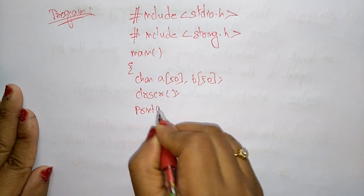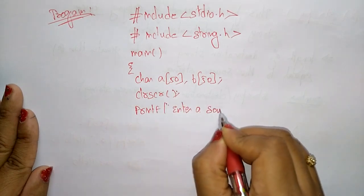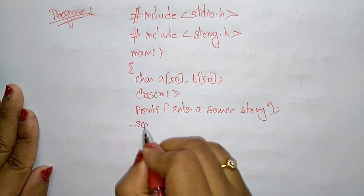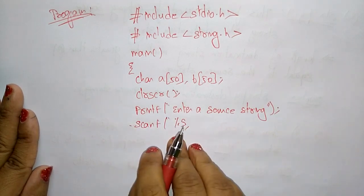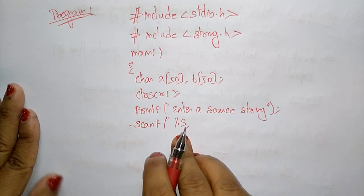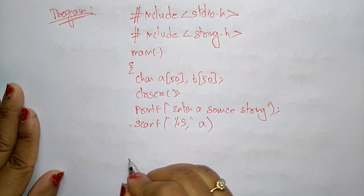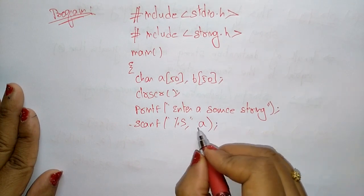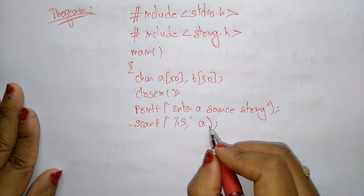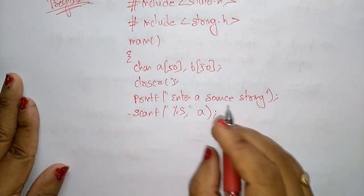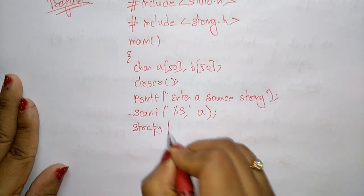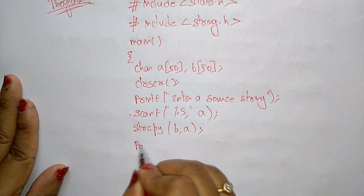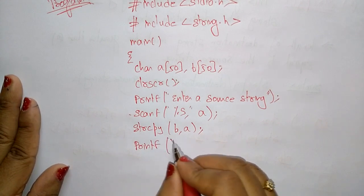We use printf to prompt the user to enter a source string, then use gets(a) to read it — we don't use ampersand because the string itself is the base address. Then we call strcpy(b, a), where a is the source string and b is the destination string.